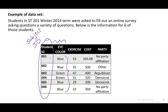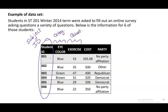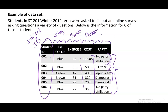Looking at eye color — blue, blue, green, brown, blue, blue. They're not numeric and it wouldn't make sense to average them, so these are categories: a categorical variable. Exercise, which I believe is in minutes — 33, 35, 47 — these are all numbers that would make sense to average, so this is a quantitative variable. Cost: money most of the time is quantitative, and it would make sense to take an average cost, so also quantitative. And then party: there are only so many categories — the two big ones, no party affiliation, and other — so this is categorical.